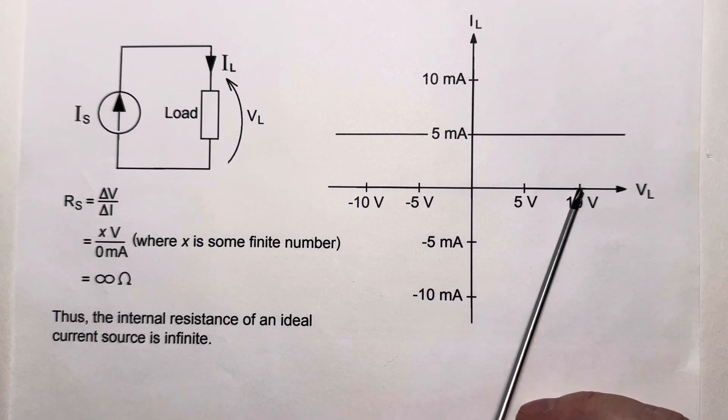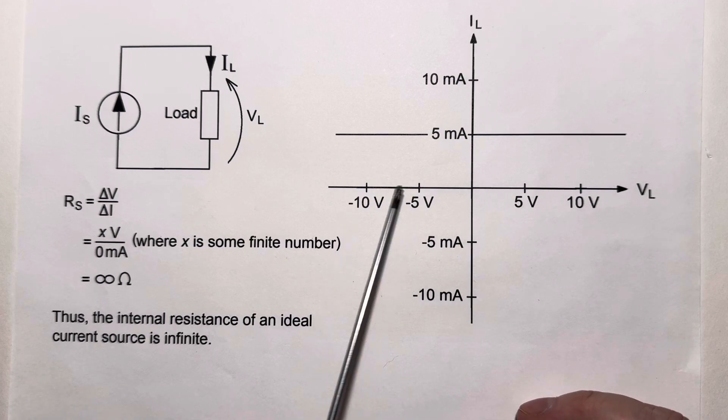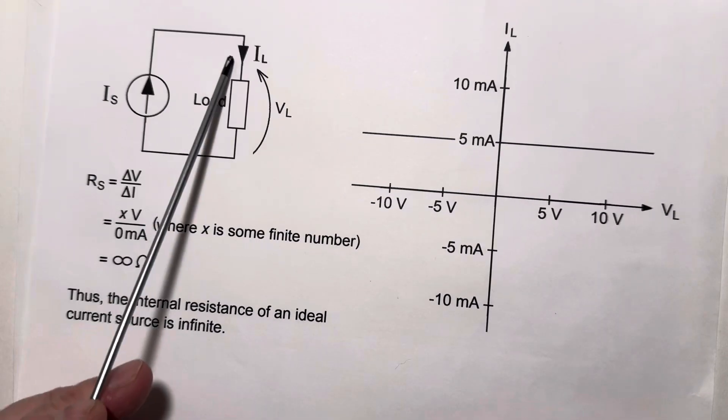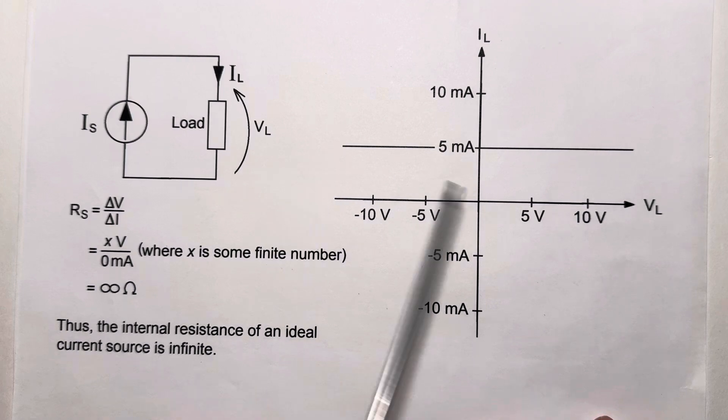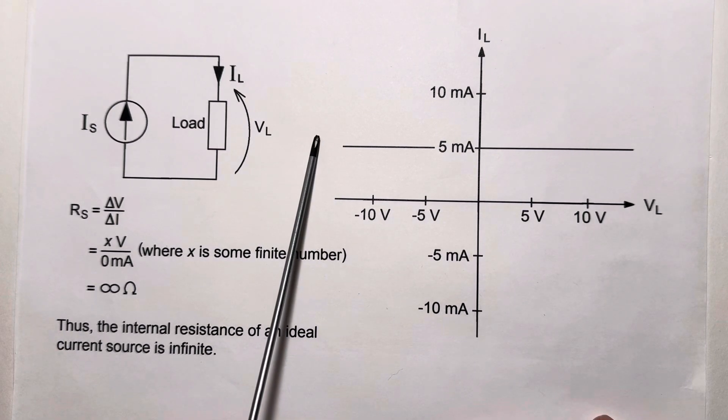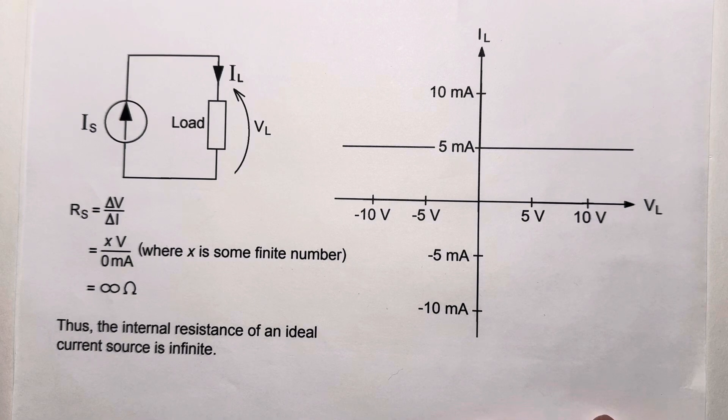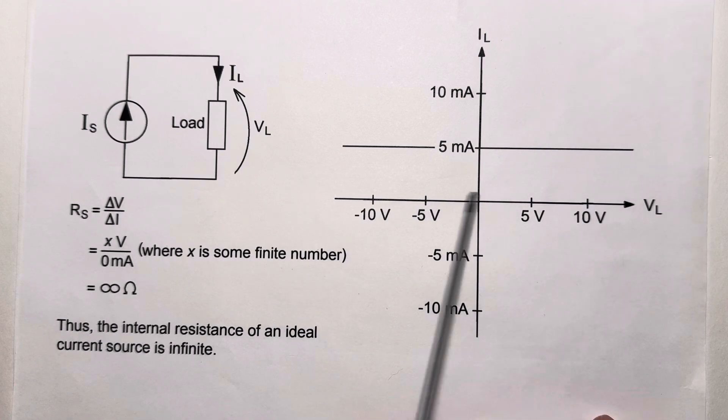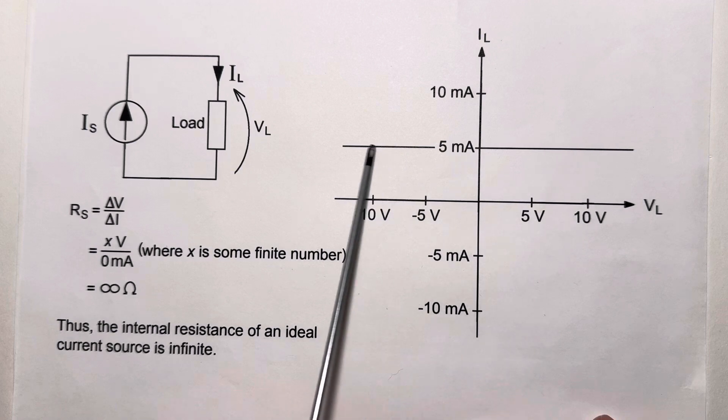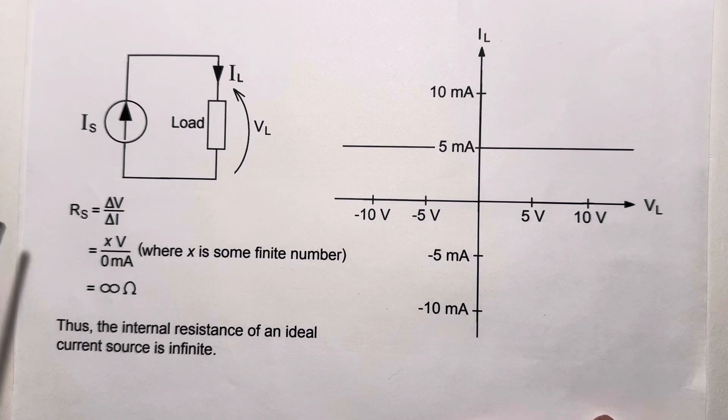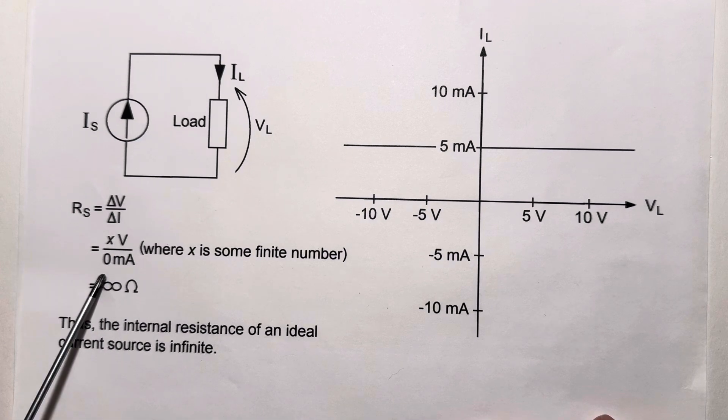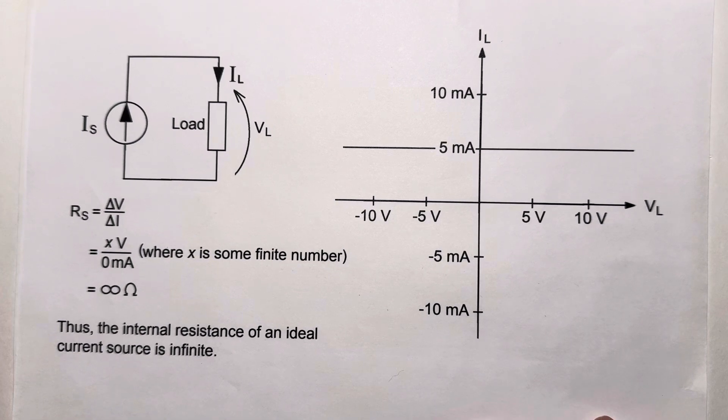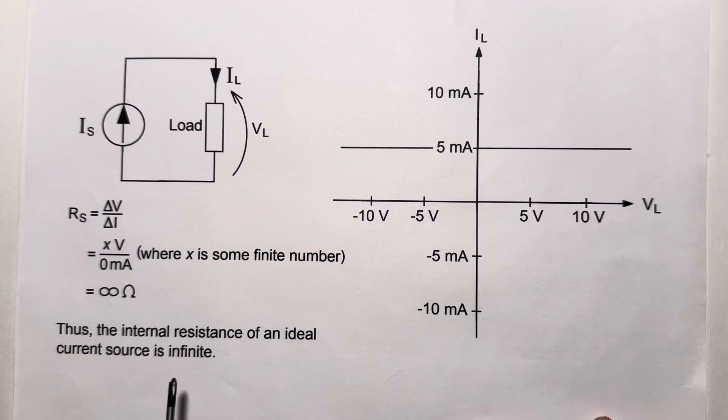It's five milliamps regardless of what the load is. So, that load could have a ten-volt drop, a five-volt drop, negative five or negative ten. It doesn't matter. It's still going to have five milliamps flowing through it. And we know from our previous discussions that when this line is horizontal, that represents infinite resistance. In other words, delta V can be any real number as long as it's finite, and delta I is zero because this line is horizontal. It doesn't change. So, any finite number divided by zero is infinity.